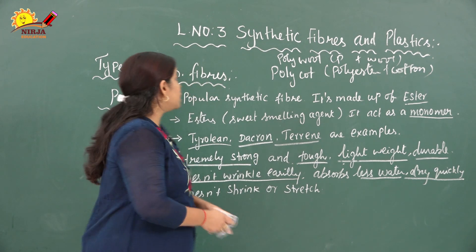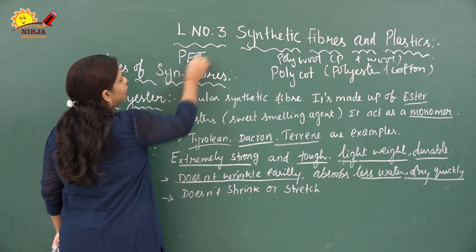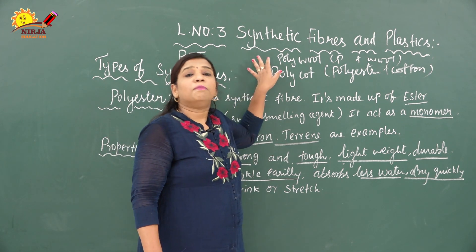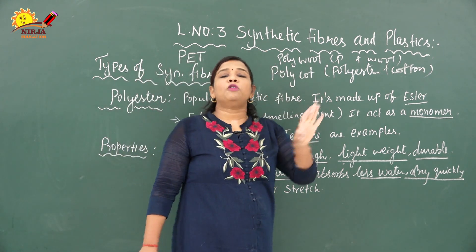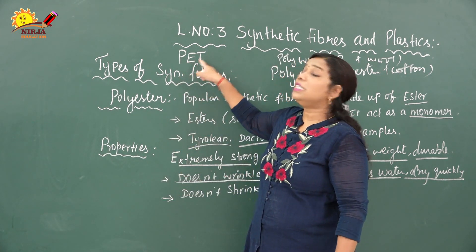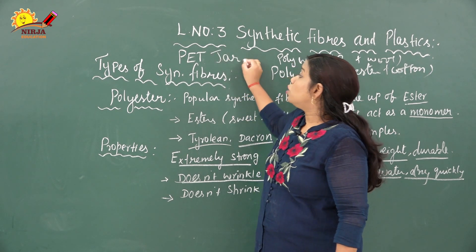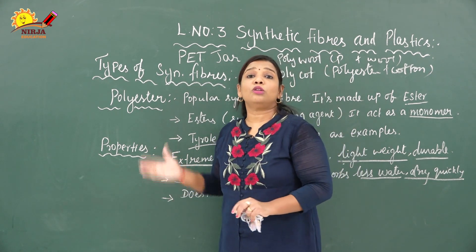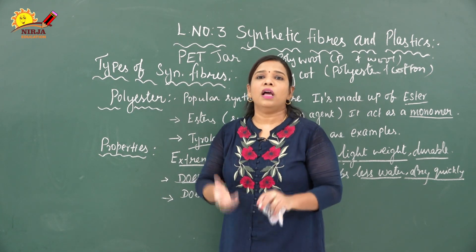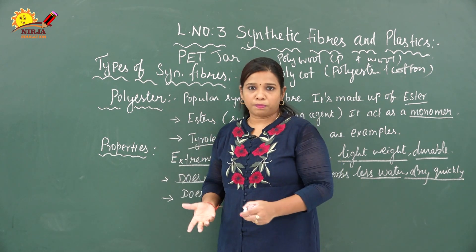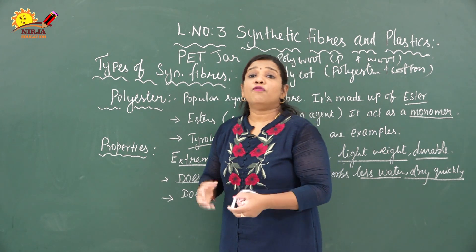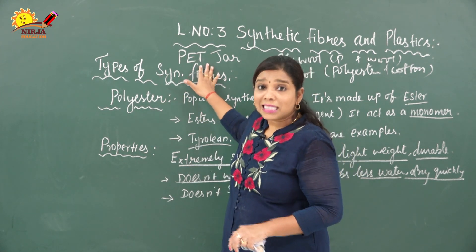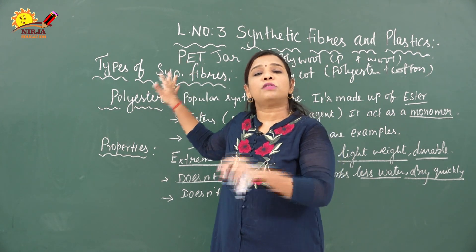Polyester also exists in another form called PET — polyethylene terephthalate. You may have heard of PET jars. PET is used widely because it is very colorful, attractive, and lightweight. We can get different designs and shapes such as water bottles, storing containers, and confectionery storage bottles. PET jars are popular because they are lightweight, less expensive, and available in different shapes and sizes.